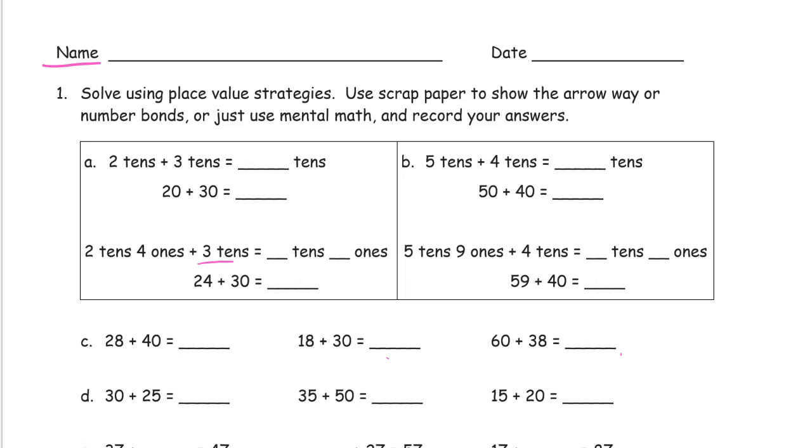I'll just give a couple of examples of different ways to solve these. If you want to do them on paper, it's all place value strategies. You can use scrap paper to show the arrow way or number bonds, or just use mental math and write down the answers. So I'll show you how to do it with the arrow way, and I'll show you how to do it with number bonds, and then I'm just going to go right through a bunch of them.